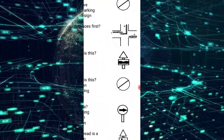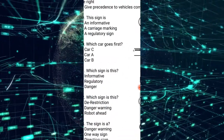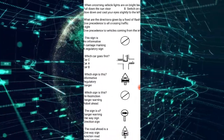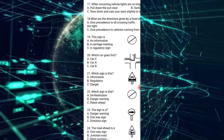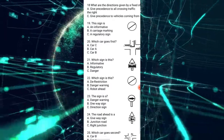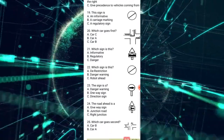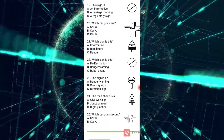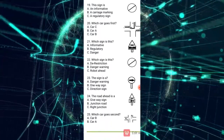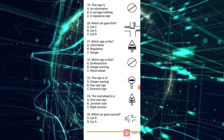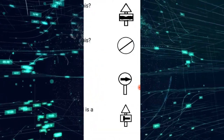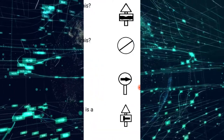Number 22: which sign is this? As mentioned for number 19, this sign is a de-restriction sign. For number 22, the answer is A.